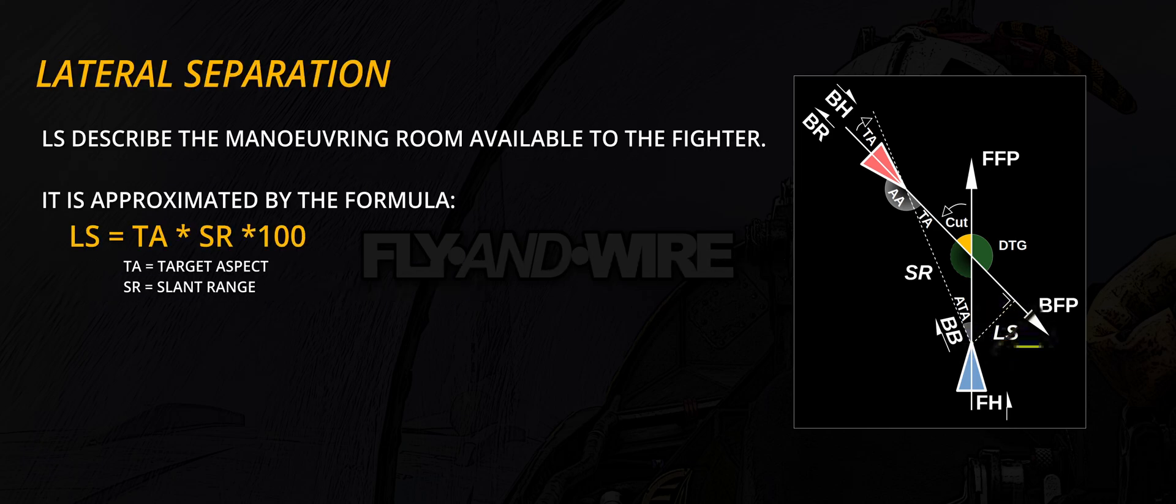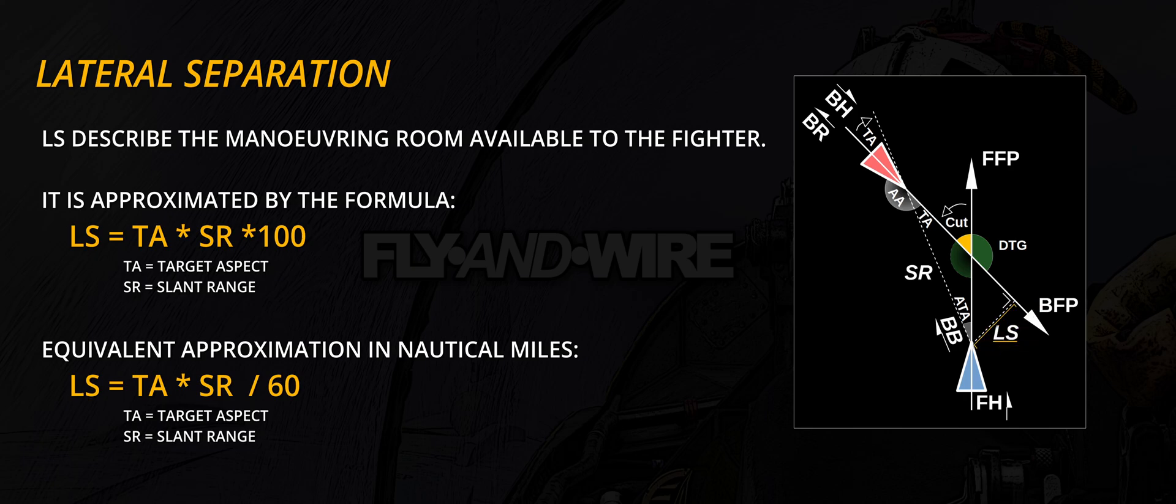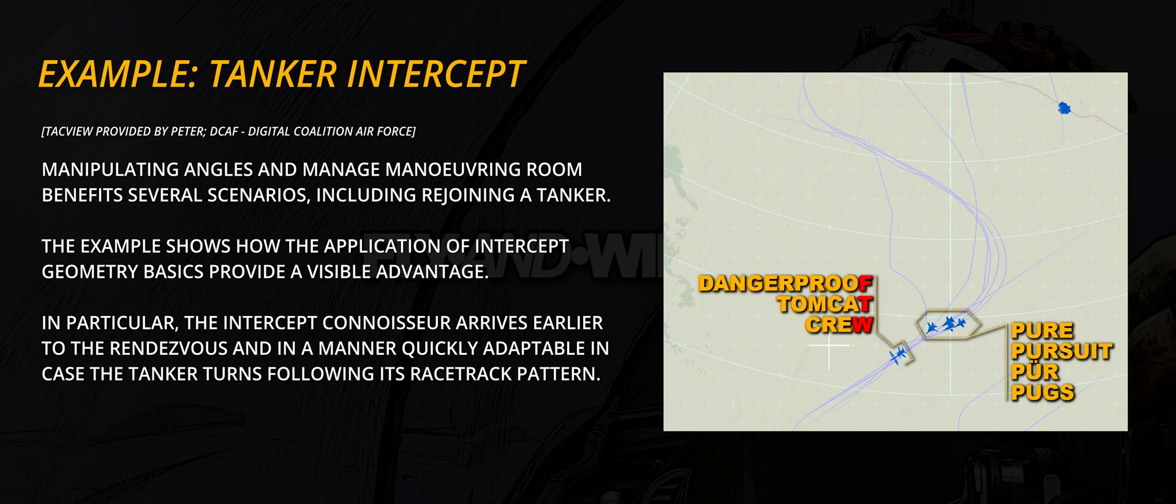Lateral separation. This term describes how much horizontal distance there is between the fighter and the bandit. It can be imagined as the projection of the fighter's position on the bandit's flight path.